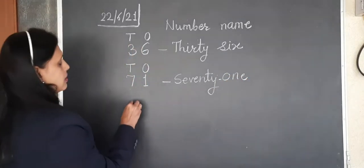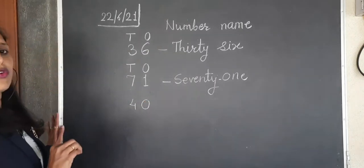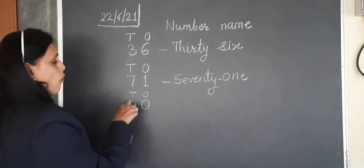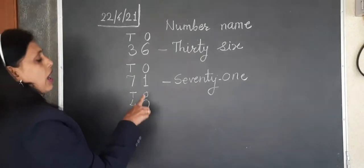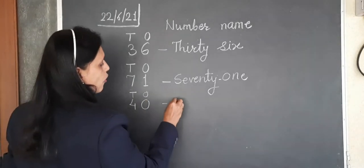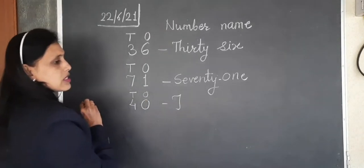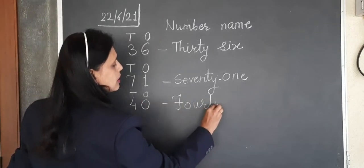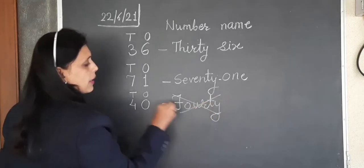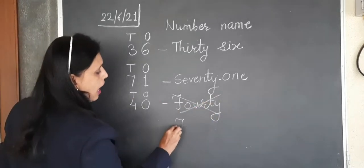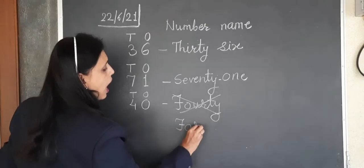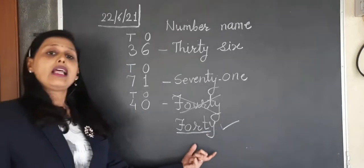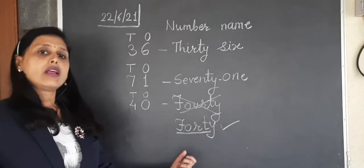Now some numbers are like this way: 40. Here tens column and ones column. 4 at tens column and 0 at ones column, so we are writing it 40. Some students are writing the spelling like this way: F-O-U-R-T-Y. This is wrong spelling. Its correct spelling is F-O-R-T-Y. This is the correct spelling. You have to write it like this way.